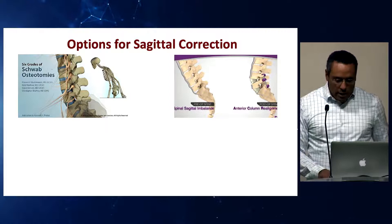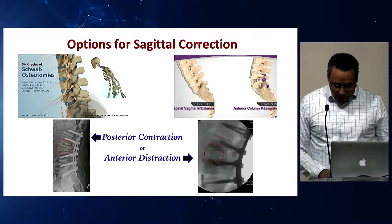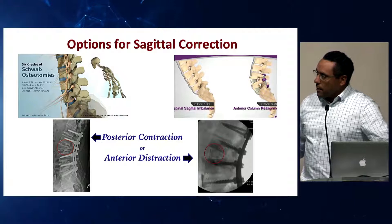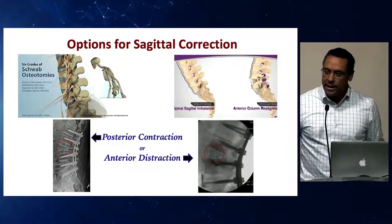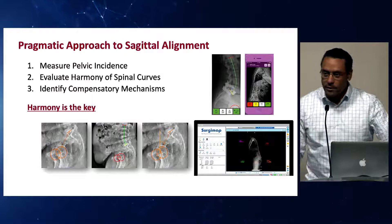Anterior lengthening interventions are growing in our practice. When we can lengthen anteriorly, we find that we can achieve induction of our spinal parameters through less blood loss. On the left is a pedicle subtraction osteotomy, and on the right is an anterior column realignment — an ACR with a hyperlordotic cage after sectioning of the ALL.